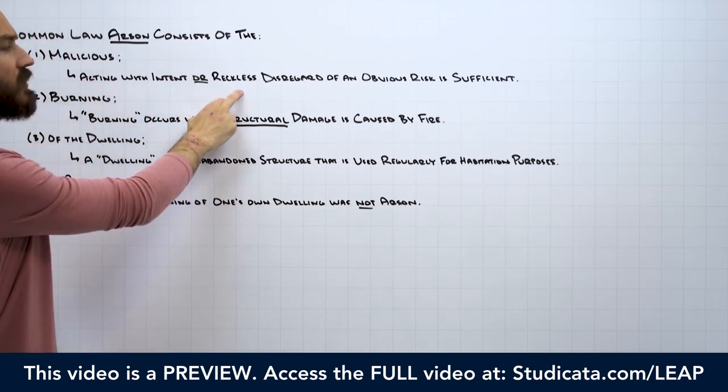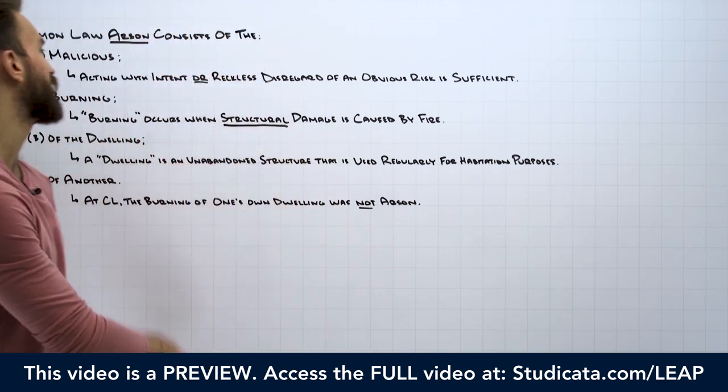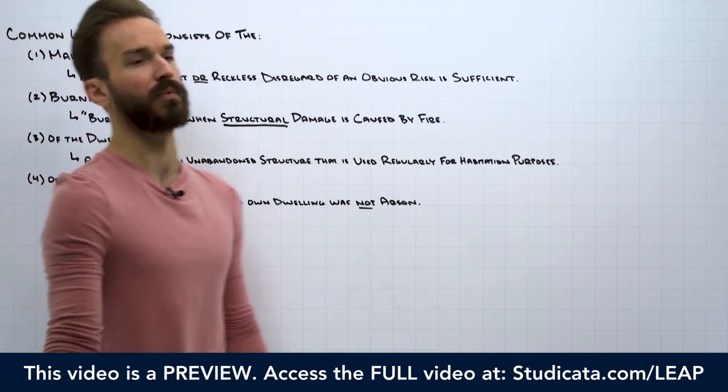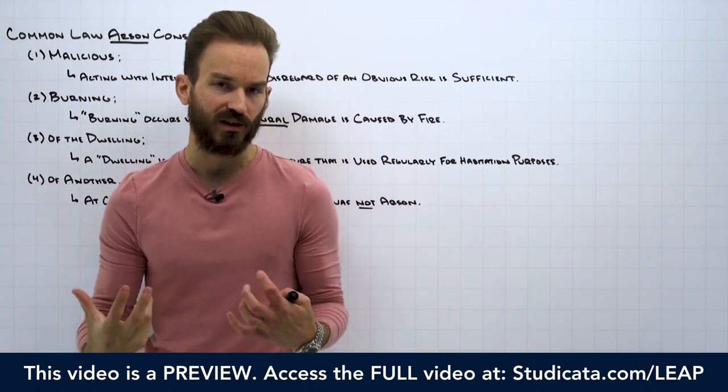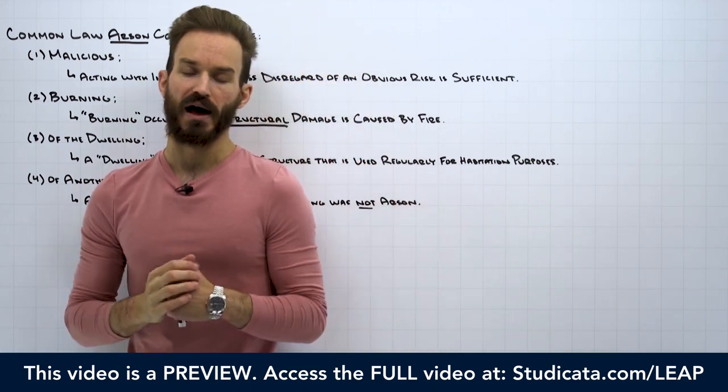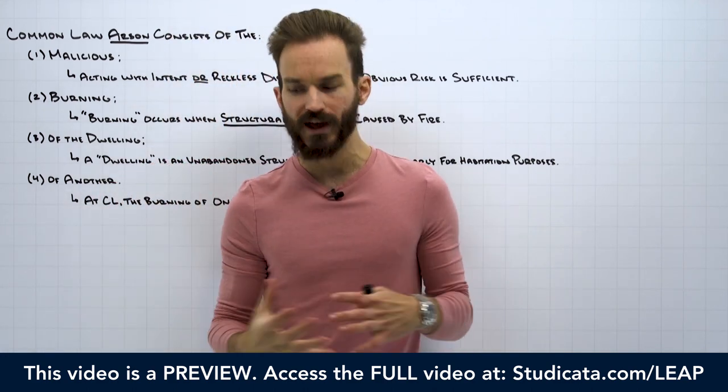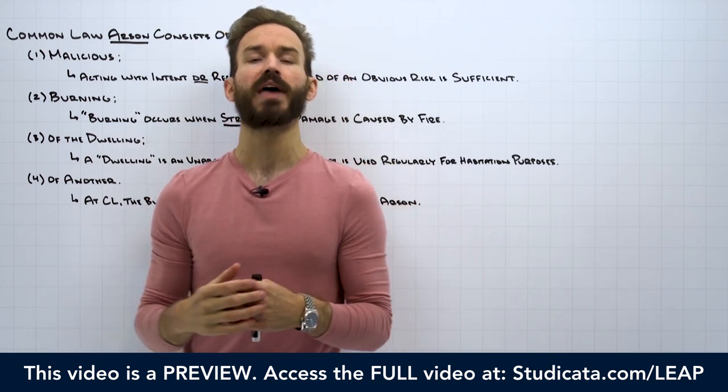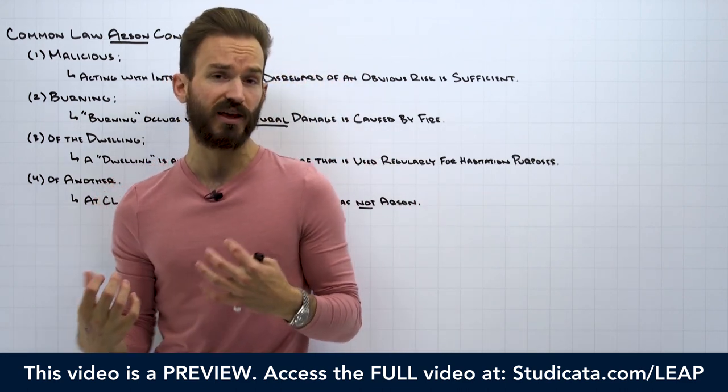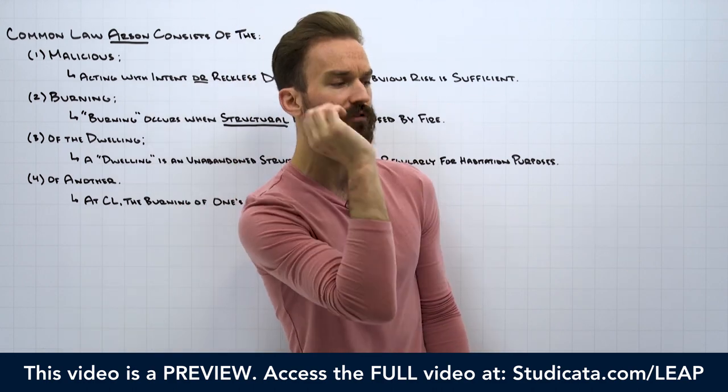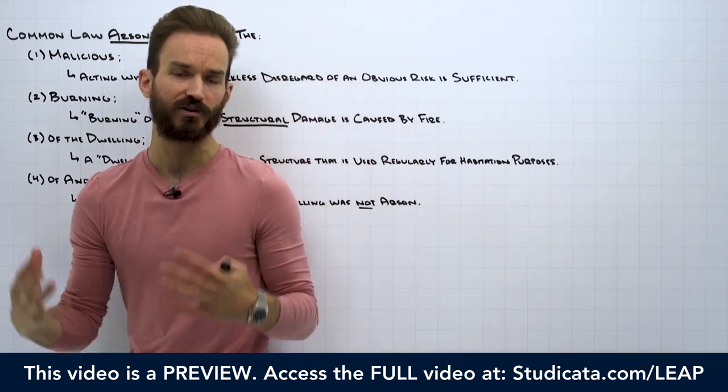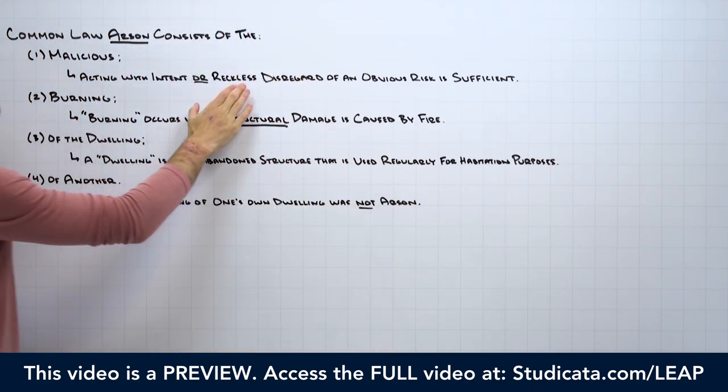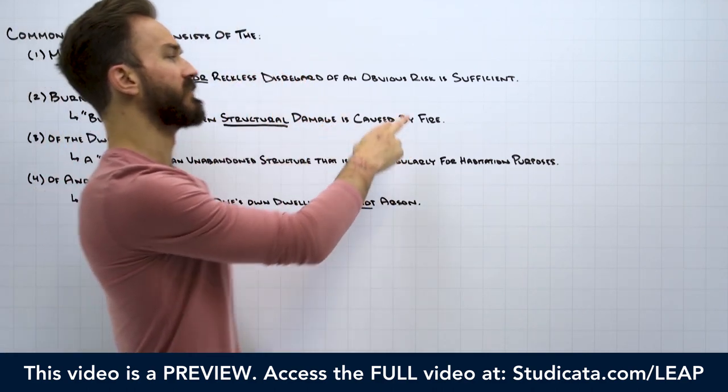But also, reckless disregard of an obvious risk can be sufficient to satisfy the first element, our malice requirement. This would be most classically flicking a lit cigarette bud. Somebody is smoking in a dwelling. The cigarette is lit and without properly extinguishing the cigarette, a person flicks that somewhere in a trash can or something. Of course, this causes a fire and the whole house burns down. That would be the type of reckless disregard of an obvious risk.